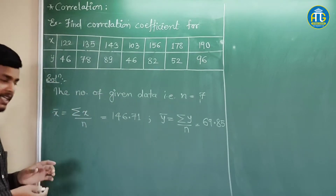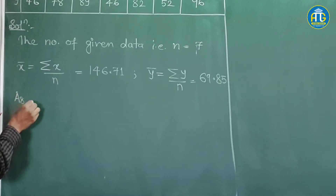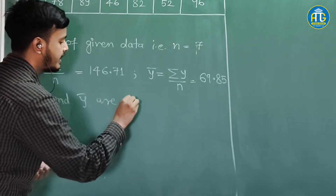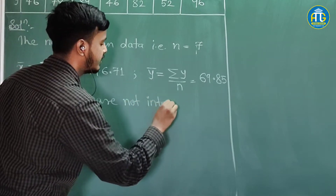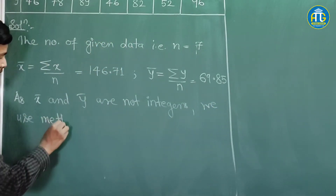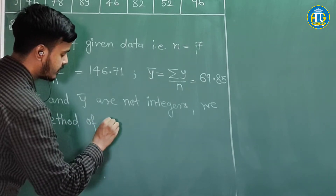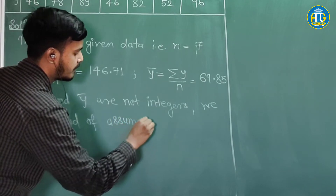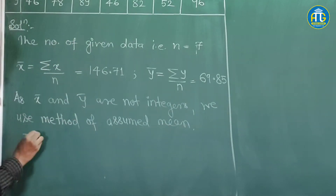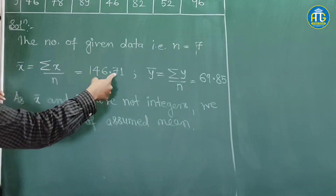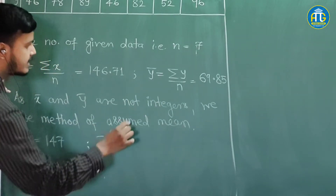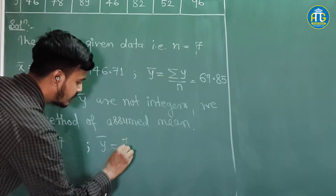So the method of assumed means would be applicable. Since x-bar and y-bar are not integers, we use the method of assumed means. We take the value of x-bar, 146.71, and round it to 147. And the value of y-bar is 69.85, so this would be rounded to 70.